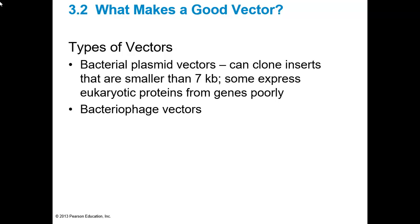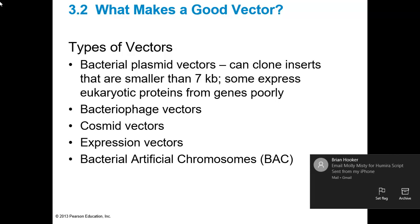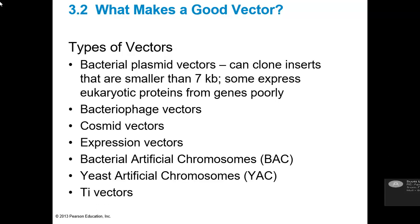Bacteriophage vectors can hold inserts up to 25 kb; cosmid vectors up to 35 kb. Expression vectors are like plasmid vectors but used for protein expression — there are specialized protein expression vectors that can go into bacteria, yeast, and higher eukaryotes. They are typically smaller-sized, more plasmid-based. Some will achieve genomic or chromosomal insertion. Bacterial artificial chromosomes and yeast artificial chromosomes can accept inserts up to megabase pairs. Ti vectors are specialized plasmids used for plant transformation.